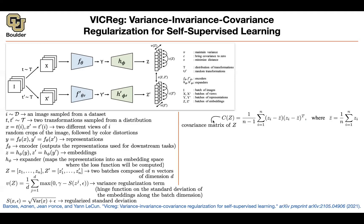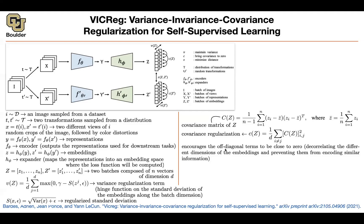The other component is computing the covariance matrix, again across the mini-batch dimension. Then you add a covariance regularization. You take all terms in your covariance matrix except for the diagonal — where i is not equal to j. You want to encourage the off-diagonal terms to go to zero. That means you're decorrelating different dimensions in your Z-vector — you want each dimension to be uncorrelated with the others, making them behave in an uncorrelated fashion. This way you encode more information individually by each dimension, or equivalently preventing them from encoding the same thing.